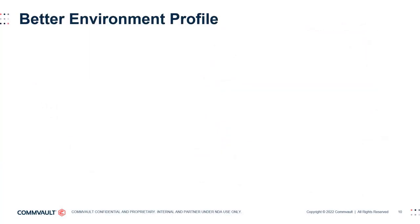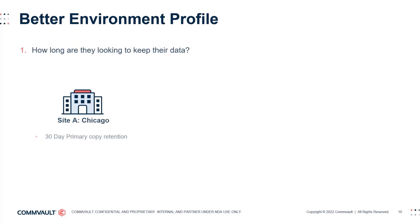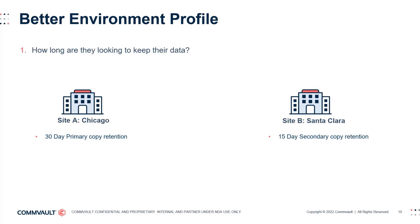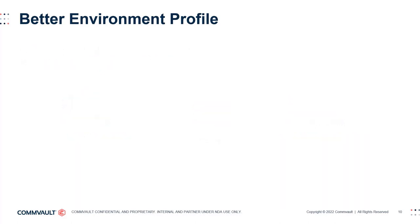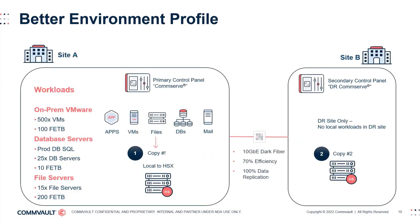To build on this profile, consider asking probing questions to help flesh out an actual basic design. For example, how long are they looking to keep their data? Depending on how long environments need data on hand, this can change where data is stored or what storage to use. In this instance, Chicago wants to keep their data on site for 30 days, and the customer also has a separate site where data can be retained for 15 days. What kind of data growth is expected? This can guide your design to include storage options that Commvault may offer, like Hyperscale or Metallic Recovery Reserve. Recovery point objectives, recovery time objectives, and recovery level objectives can change the whole scope of a design.